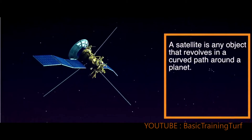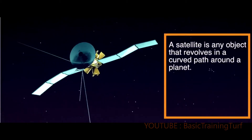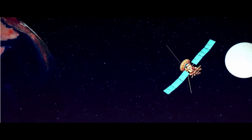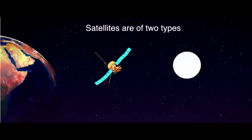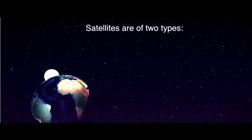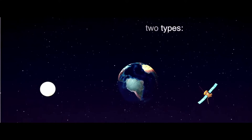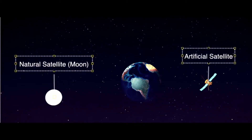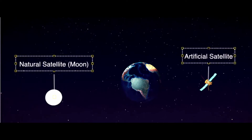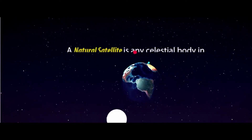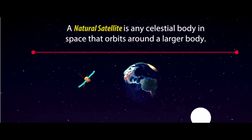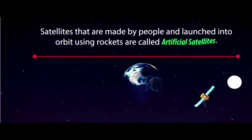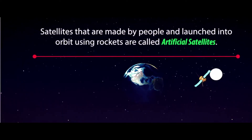A satellite is any object that revolves in a curved path around the planet. There are two major types of categorization when it comes to satellites: one is natural satellite and the other is artificial satellite. A natural satellite is any celestial body in space that orbits around a larger body. Satellites that are made by people and launched into orbit using rockets are called artificial satellites.